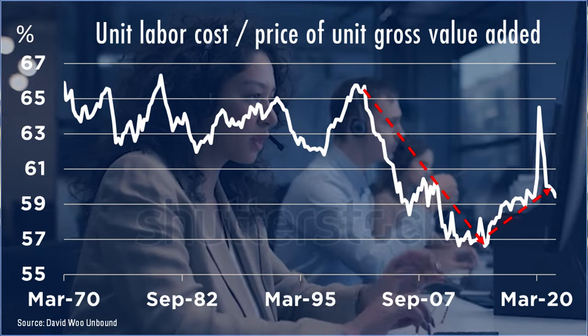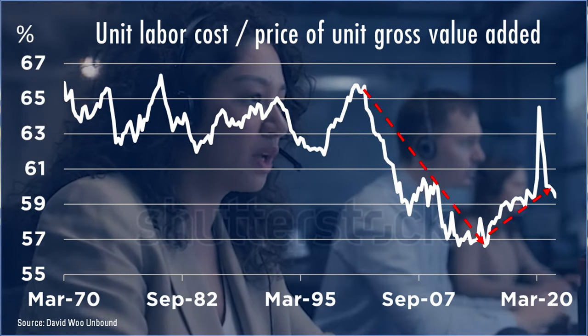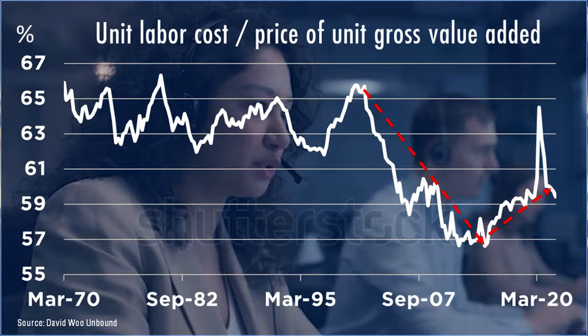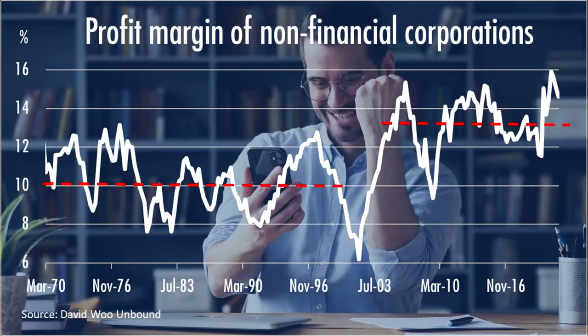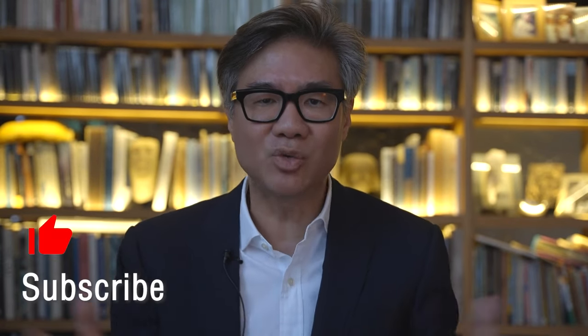It's been reversing gradually since, but it's still much lower than it was 20 years ago. The consequence is that the profit margin of non-financial corporations has risen from 10% at the start of the new millennium to about 13% over the last 10 years. That represents a 30% widening of corporate profit margins, and this is the first reason why the Buffett indicator began to break down.